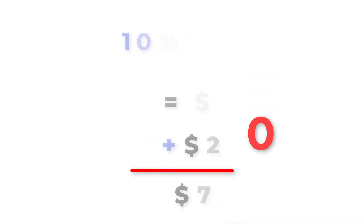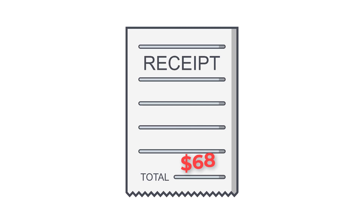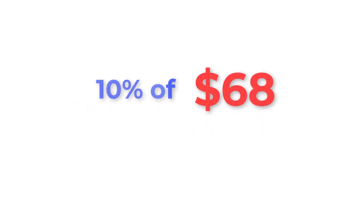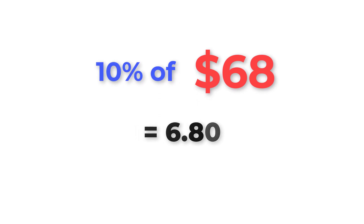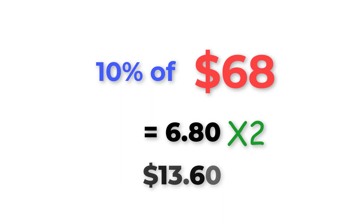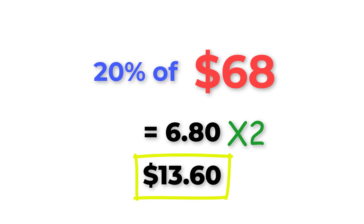Let's try one more for good measure. But this time, we will tip 20% of $68. Using the same method as before, 10% of 68 is $6.80. If we double this amount, we get 20%. So taking $6.80 and multiplying it by 2, that's $13.60. Therefore, 20% of 68 is $13.60.